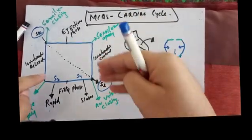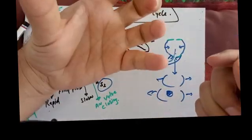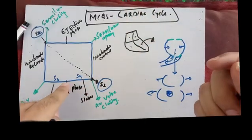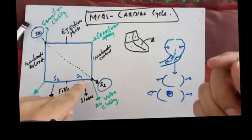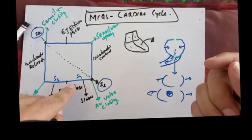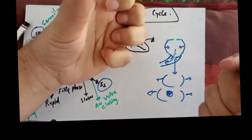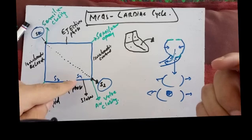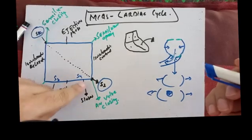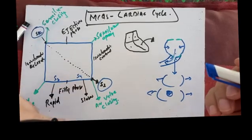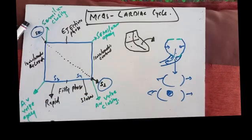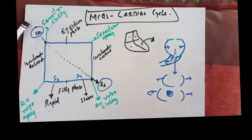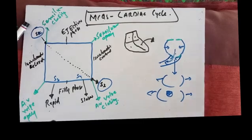In rapid filling, the left ventricle fills rapidly without left atrial contraction. In the last phase of diastole, the left atrium contracts and fills the last 20% of the ventricle. Then the mitral valve closes again, completing the cycle.